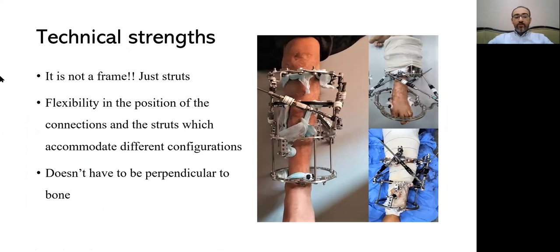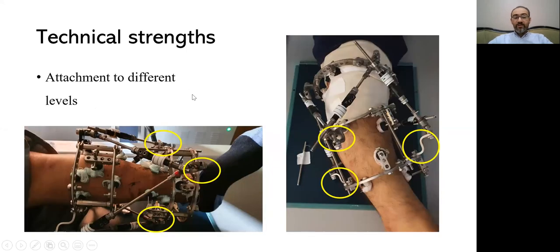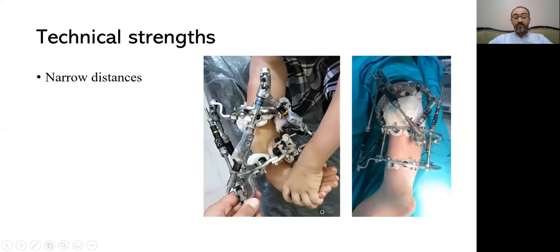Strengths of this frame: it's not a frame — just struts — so you can apply it to anything. It is flexible in strut positioning, can be applied not perfectly centered, rings can be oblique without problem. A major strength is attachment flexibility: unlike TSF, TL-Hex, or other hexapods where struts must be between the two rings, here you can attach struts at different levels on the outside — a massive advantage especially with small legs and narrow distances, without needing the seven to eight centimeters of gold standard spacing in TSF. No numbers to read — the patient just needs to align a line, doing 90-degree turns.